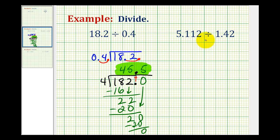Let's go ahead and try a second example. We have 5.112 divided by 1.42.